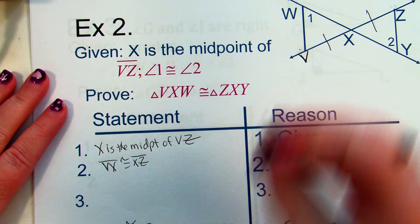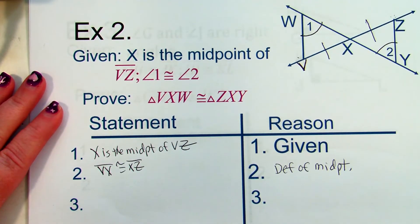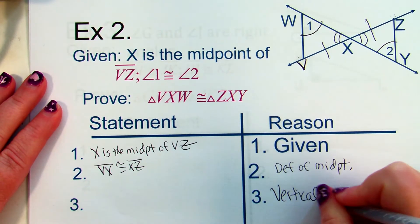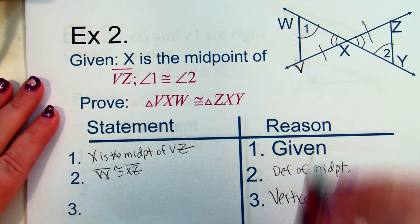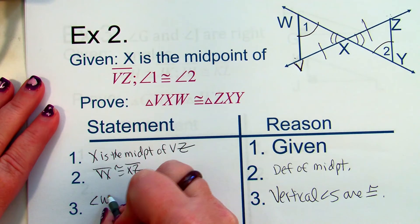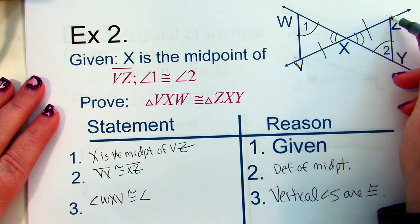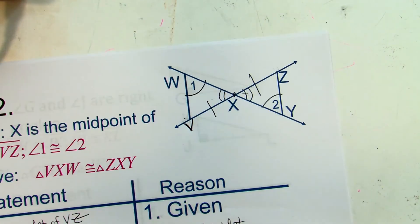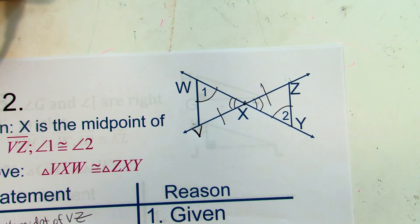Does anybody see any other angles we can mark congruent? Vertical angles are congruent — so angle WXV is congruent to angle YXZ. X has to be the middle letter because it's the vertex. Now, which method is it? We have two angles, so it's either ASA or AAS. The side is opposite one of the angles, so it's the AAS theorem — angle-angle-side.